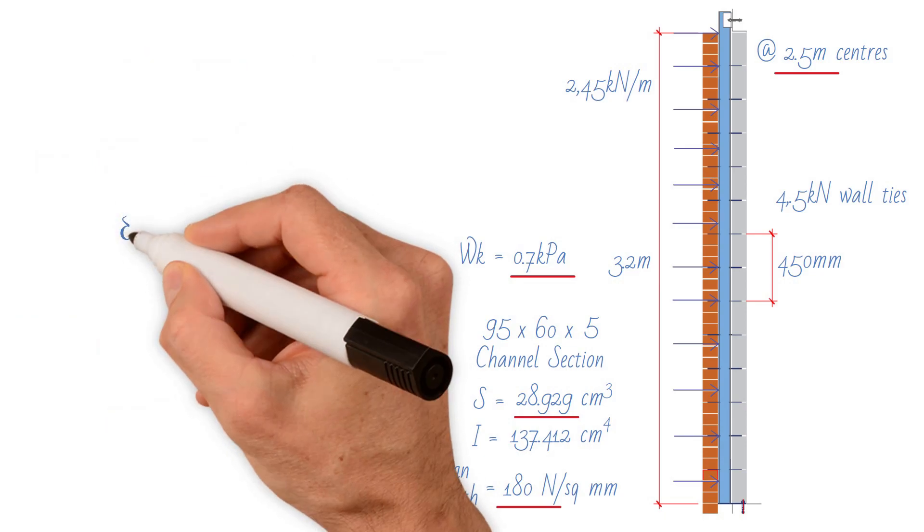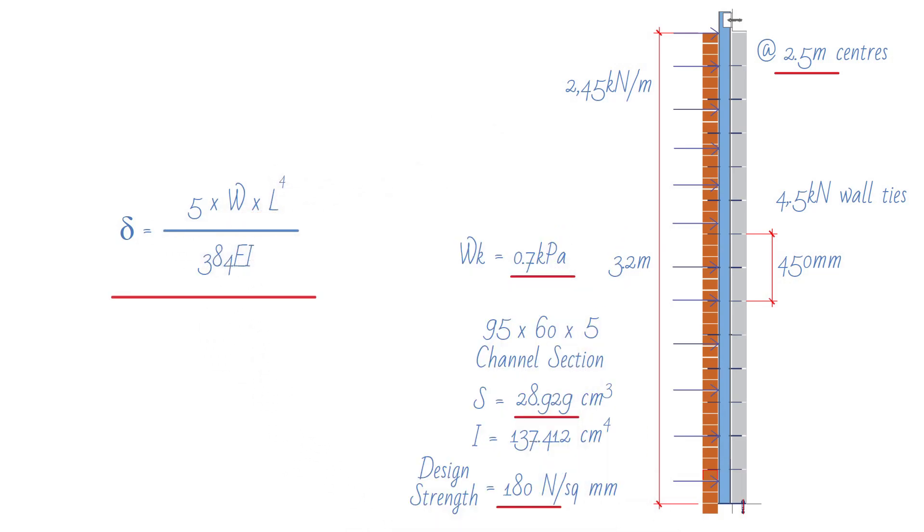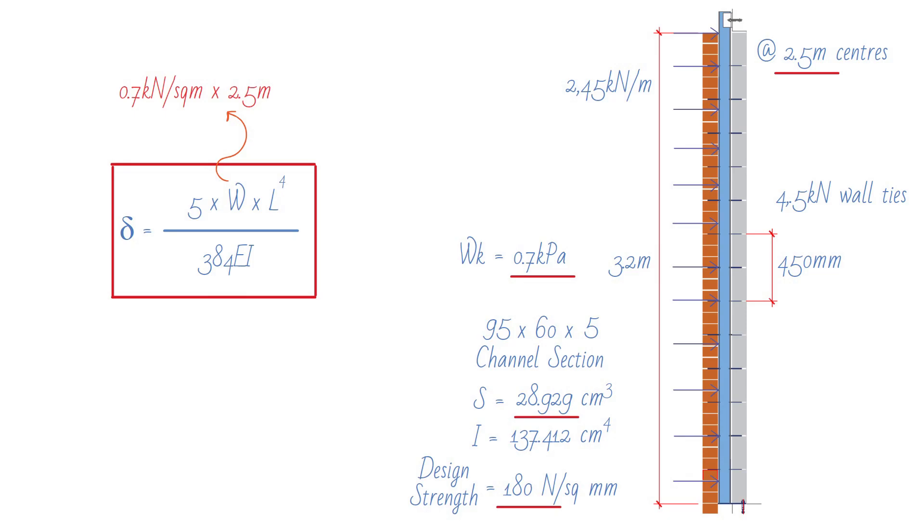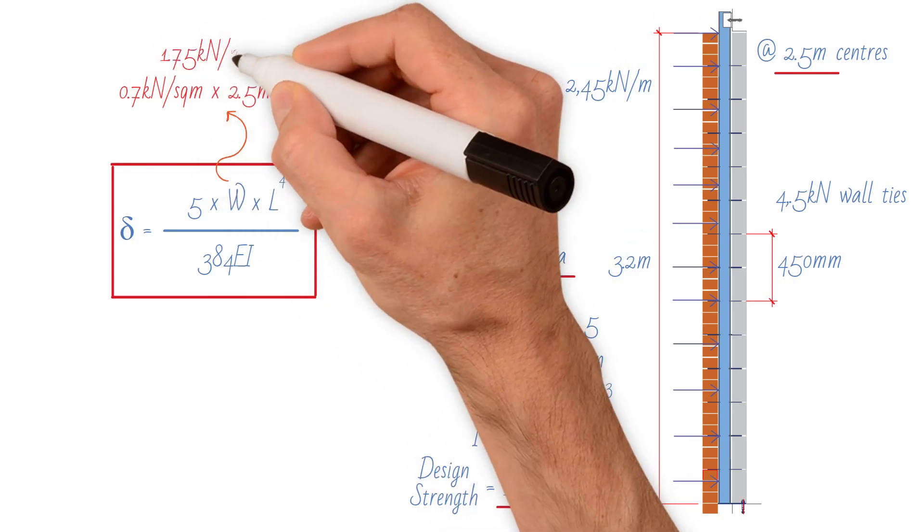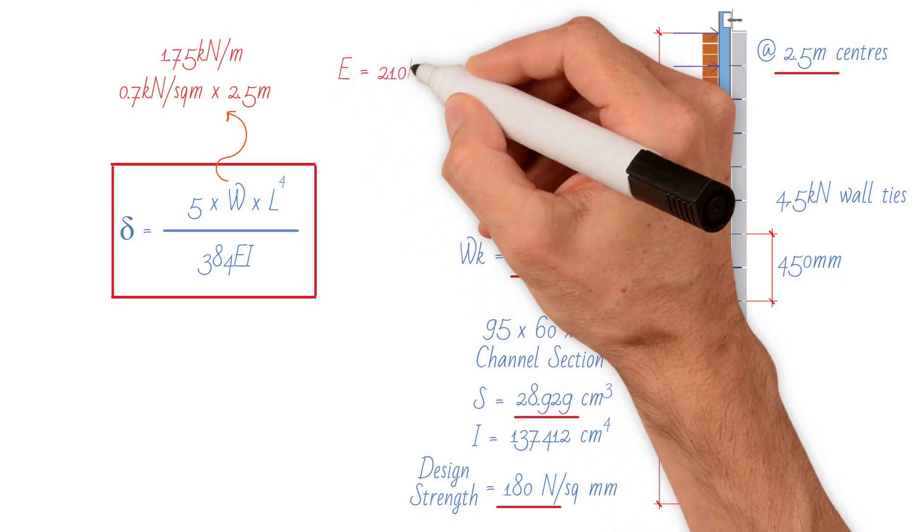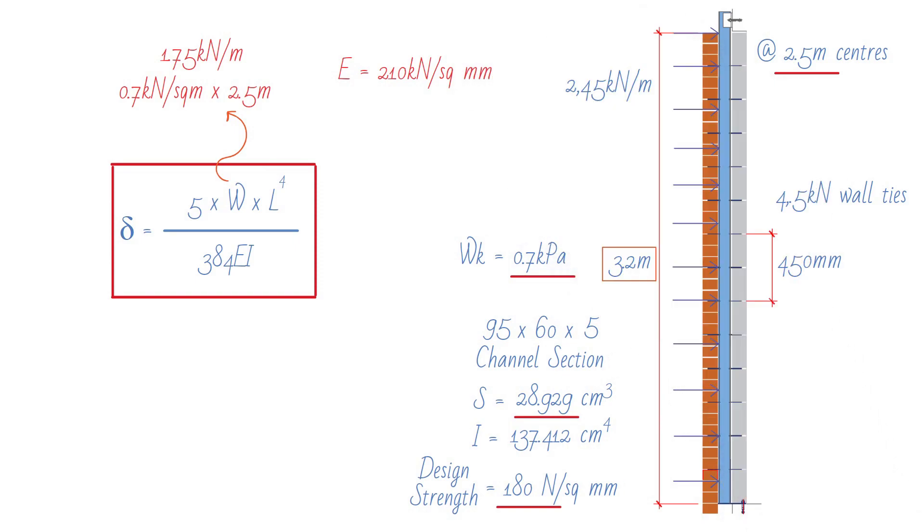Next, we need to do deflection check using a simply supported deflection formula. We have all this information. W is 0.7 times 2.5 meters, which is 1.75 kilonewtons per meter. L is the wall height 3.2 meters. E is Young's modulus 210 kilonewtons per square millimeter. We will be using kilonewton and millimeters.